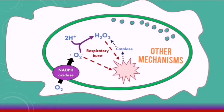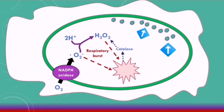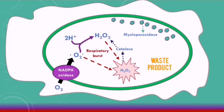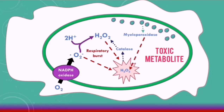There are other mechanisms that phagocytes have for intracellular killing. These lysosomal granules contain important enzymes such as myeloperoxidase. Myeloperoxidase breaks down hydrogen peroxide that is produced as a waste product inside the pathogens. When myeloperoxidase targets this hydrogen peroxide, it breaks it down into a toxic metabolite which destroys the pathogens.